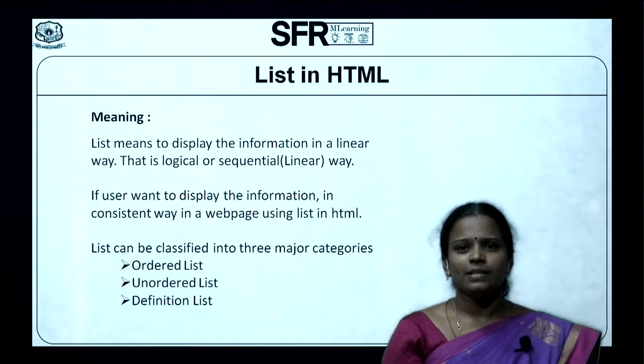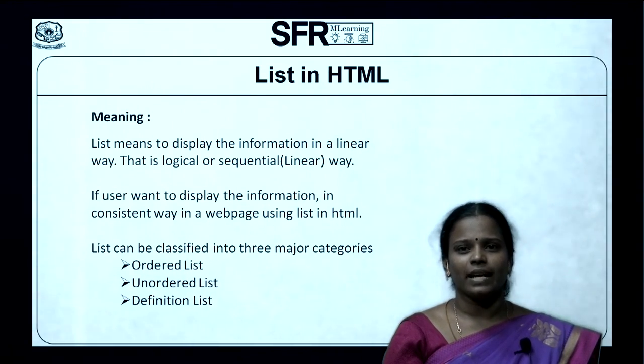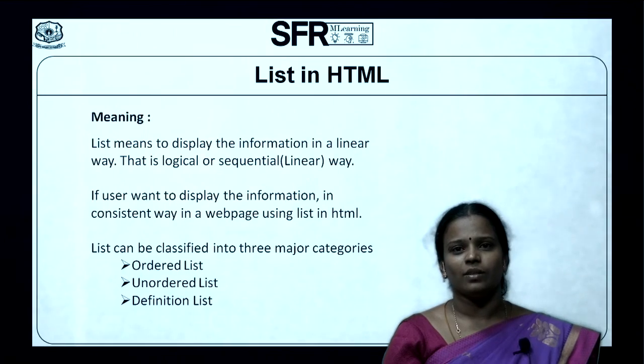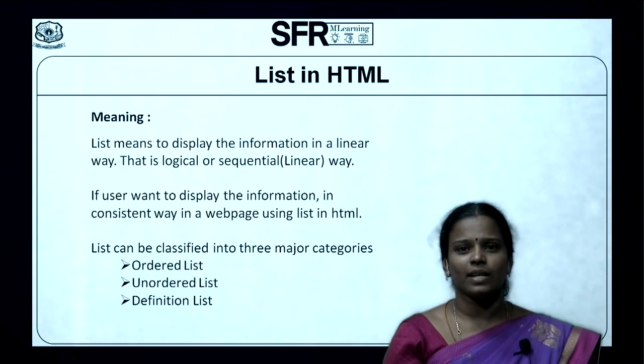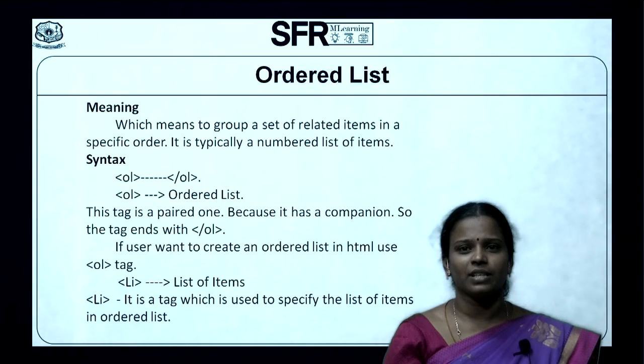List can be classified into three major categories. First one: Ordered List. Second one: Unordered List. Third one: Definition List.